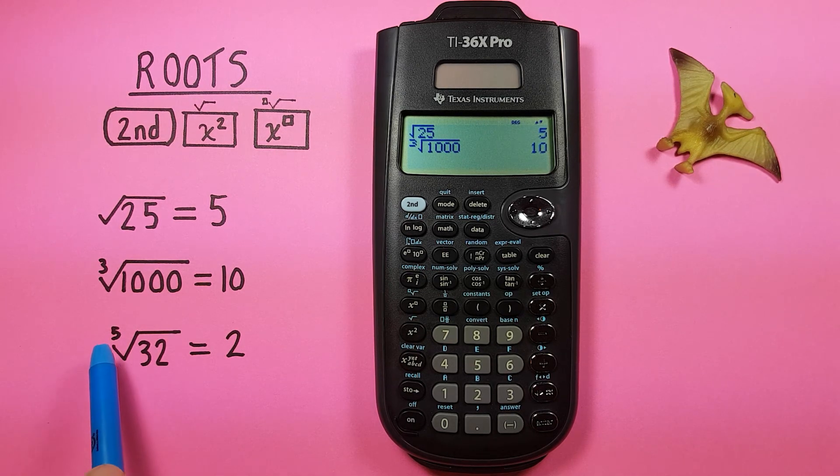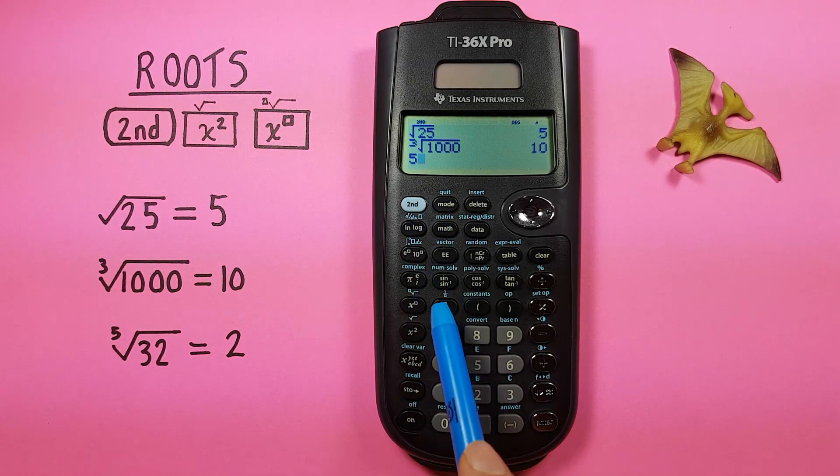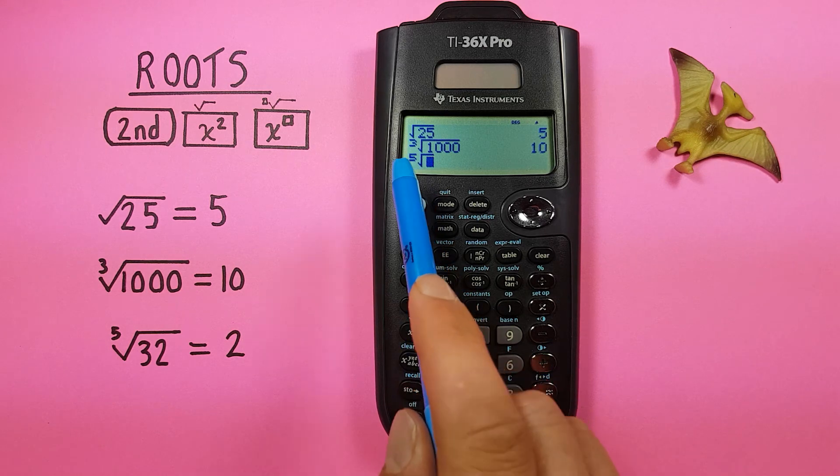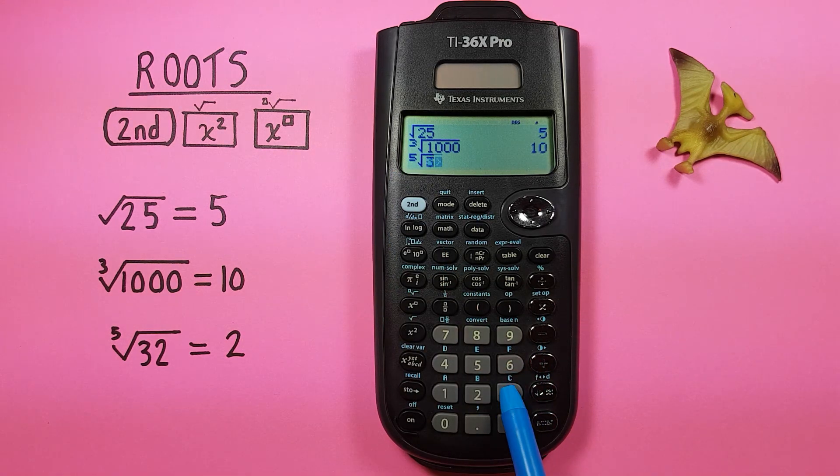One more example, let's try the fifth root of 32. Press the 5 because that's our root, second exponent key, there we go, fifth root, and then 32 equals 2.